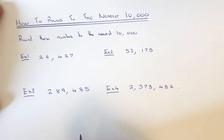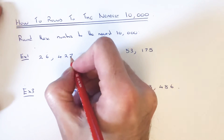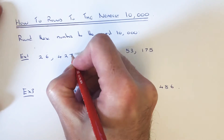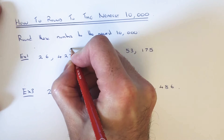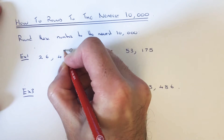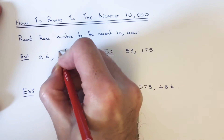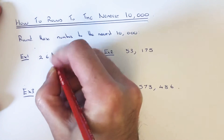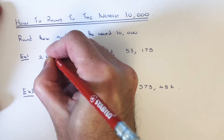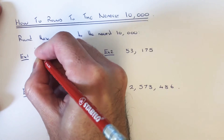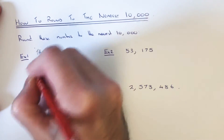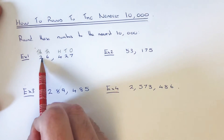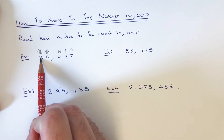If you start on the right hand side of the number, that first column is the ones or units, then you've got your tens column, then your hundreds column, then your thousands column, and then after that you've got your tens of thousands column. We've got a two in the tens of thousands column.